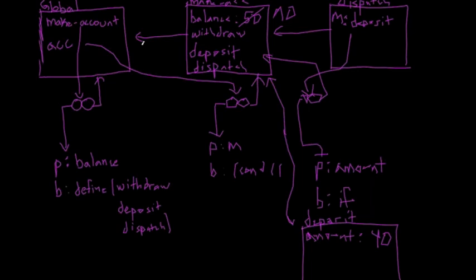This is basically a simple environment diagram for the make-account problem. If you want to go more in depth, feel free to try an example with withdraw on any number you want and mess around with it. In a later video, I will be talking about the make-joint-account problem and drawing environment diagrams for more complicated things like that. Thank you, and see you next time.